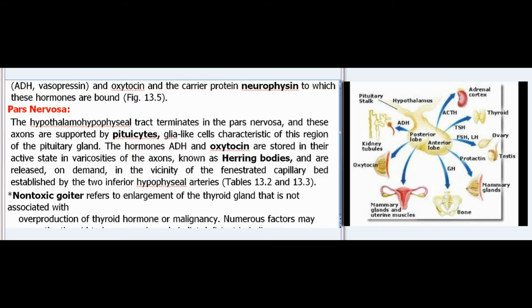The hypothalamohypophysial tract terminates in the pars nervosa, and these axons are supported by pituicytes — glial-like cells characteristic of this region. The hormones ADH and oxytocin are stored in their active state in varicosities of the axons known as Herring bodies, and are released on demand in the vicinity of the fenestrated capillary bed established by the two inferior hypophysial arteries (Tables 13.2 and 13.3).